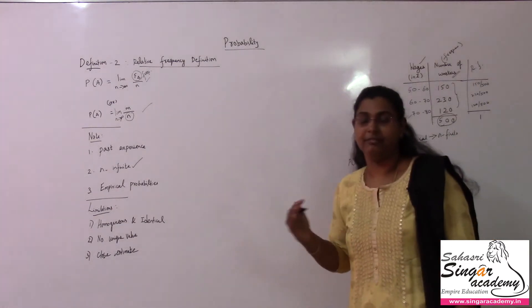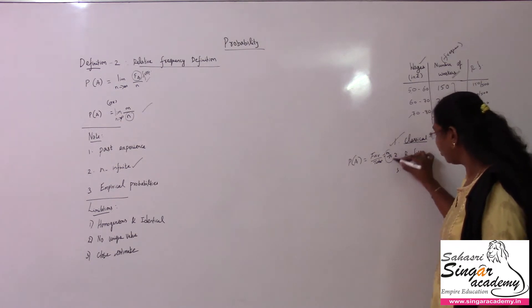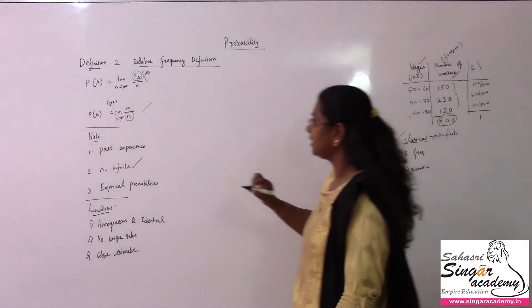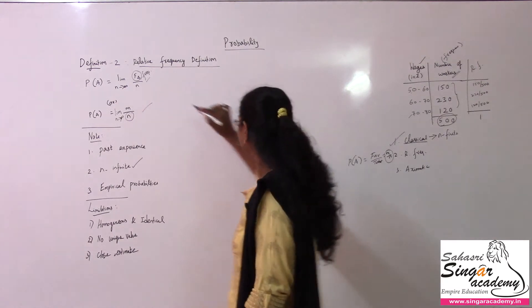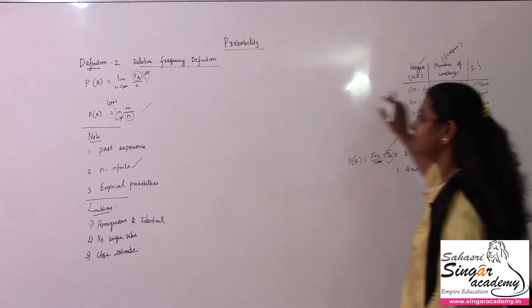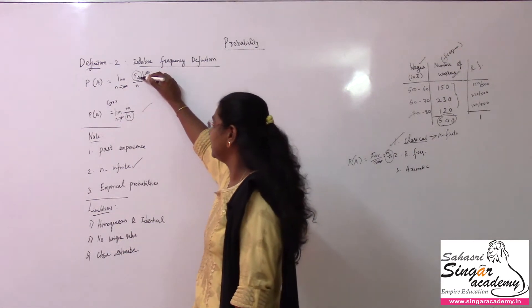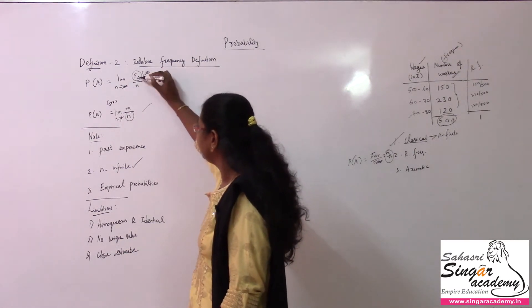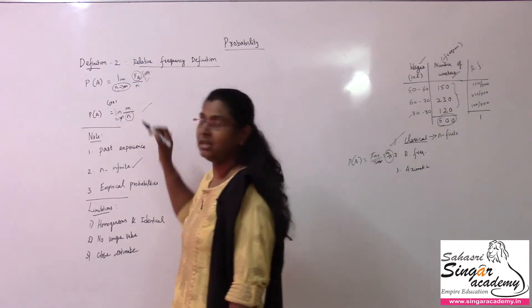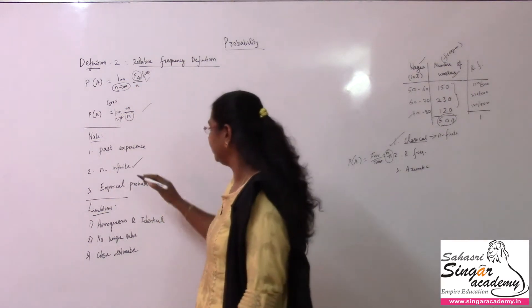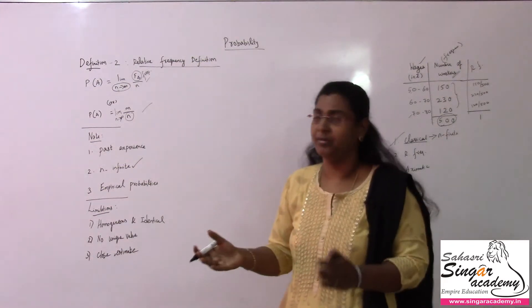This is not just like normal m by n; it is limit n tends to infinity of m by n. Taking frequency values — frequency of that event, that range — so limit n tends to infinity of f(A) divided by n, where n tends to infinity, gives more confidence about the definition. N can be any number, infinite — you need not know the stop of the numbers.